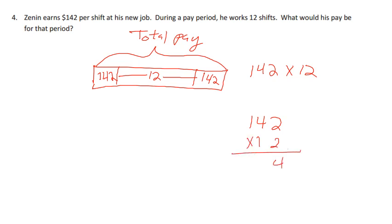2 times 2 is 4, 2 times 4 is 8, 2 times 1 is 2. Put our placeholder, 1 times 2 is 2, 1 times 4 is 4, 1 times 1 is 1. We have 4, 8 and 2 is 10, carry our 1, it would be 6 and 7. So his total pay would equal $1,704 for that period.